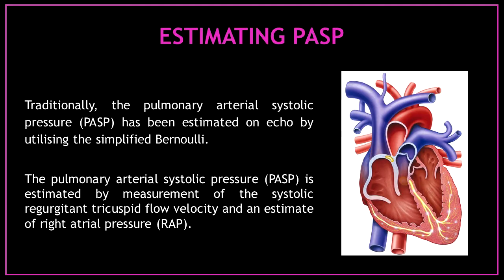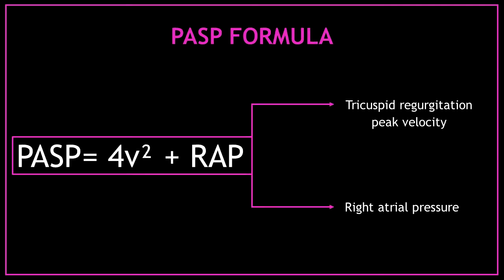How do we estimate the pulmonary artery systolic pressure? Traditionally, the pulmonary artery systolic pressure has been estimated on ECHO by utilizing the simplified Bernoulli equation. The pulmonary artery systolic pressure is estimated by measurement of the systolic regurgitant tricuspid flow velocity and an estimate of right atrial pressure. You only need two things: the tricuspid regurgitation peak velocity, and the right atrial pressure. With only these two things and by applying the formula, you will be able to obtain the pulmonary artery systolic pressure.